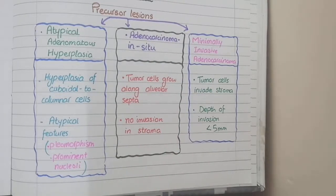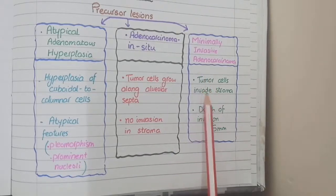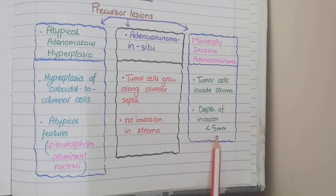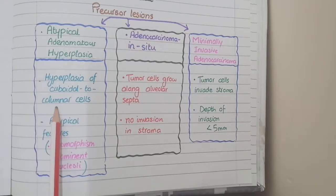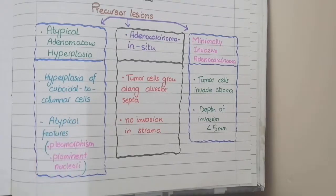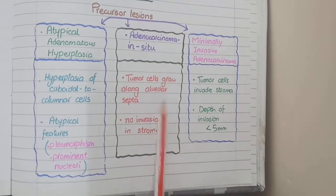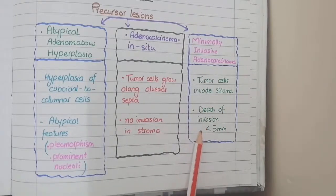The third precursor lesion is minimally invasive adenocarcinoma, in which tumor cells invade the stroma but the depth of invasion is minimum — less than 5 mm to be exact. Overall: in atypical adenomatous hyperplasia you see hyperplasia of cuboidal to columnar cells; in adenocarcinoma in situ, cancerous cells with no invasion; in minimally invasive adenocarcinoma, cancerous cells with invasion of less than 5 mm.